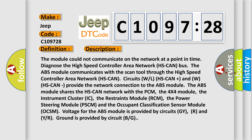The module could not communicate on the network at a point in time. Diagnose the high speed controller area network HS-CAN bus. The ABS module communicates with the scan tool through the high speed controller area network HS-CAN circuits. HS-CAN plus and HS-CAN provide the network connection to the ABS module.